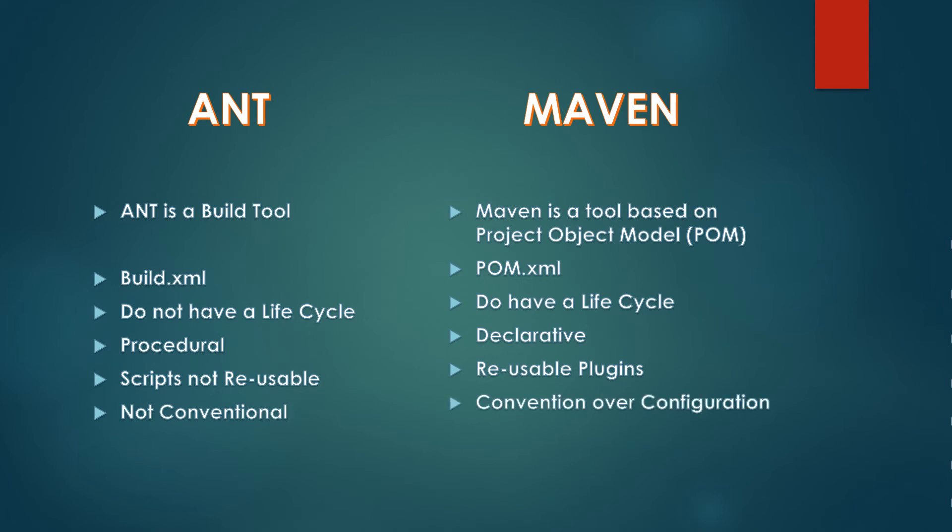Maven works on convention over configuration, so we do not have to define the project structure manually, but in Ant it is all manual. Finally, Maven is more preferable because of its flexibility and reusability. This is all about the differences.